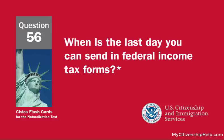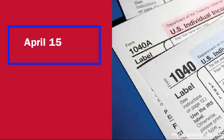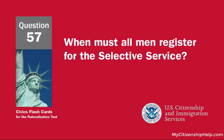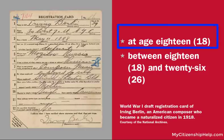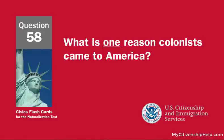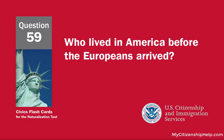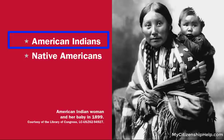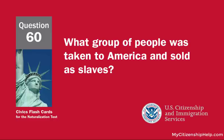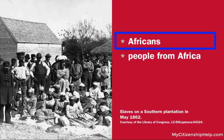When is the last day you can send in federal income tax forms? April 15. When must all men register for the selective service? At age 18. What is one reason colonists came to America? Freedom. Who lived in America before the Europeans arrived? American Indians. What group of people was taken to America and sold as slaves? Africans.